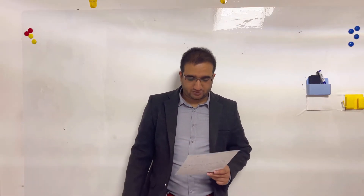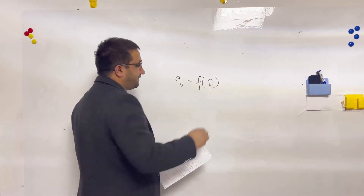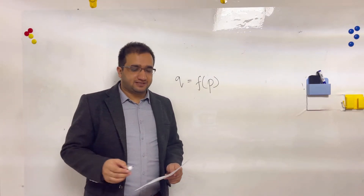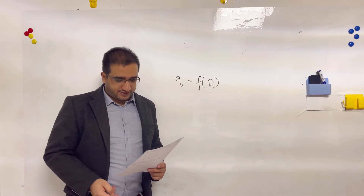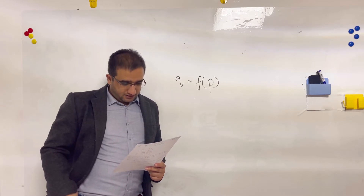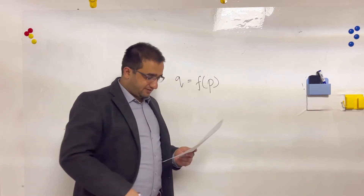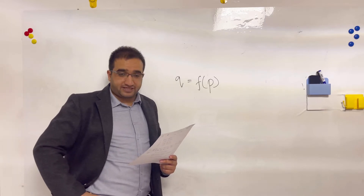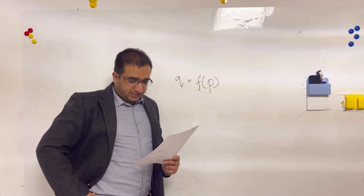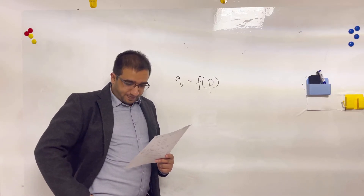Next problem: a manufacturer produces bolts of fabric with fixed width. The quantity Q that is sold is a function of P in dollars per yard, so Q equals F of P. We are discussing applications of derivatives in real life — in business, physics, and biology. This is a kind of business problem. The quantity Q is the function and P is the variable.